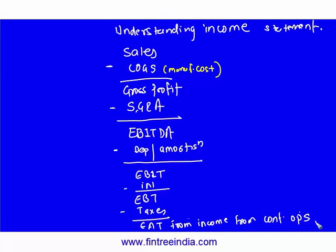So I am going to repeat the format for you. We started with sales. Sales minus COGS gives gross profit; minus SG&A gives EBITDA; minus depreciation gives EBIT; minus interest gives EBT; minus taxes gives EAT from continuing operations.